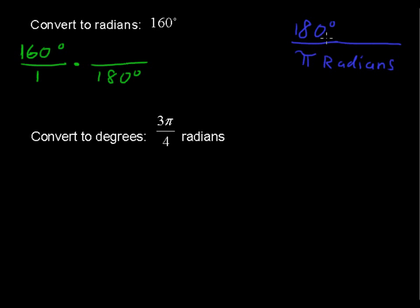In this case, we're multiplying by the reciprocal of this fraction in blue. 180 degrees in the denominator so that the degrees will cancel out when we multiply these, and pi radians in the numerator.